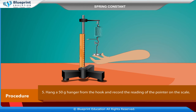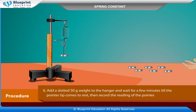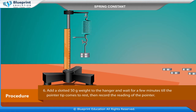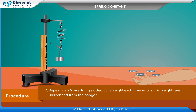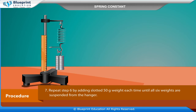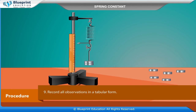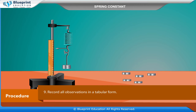Hang a 50 gram hanger from the hook and record the reading of the pointer on the scale. Add a slotted 50 gram weight to the hanger and wait for a few minutes till the pointer tip comes to rest, then record the reading of the pointer. Repeat by adding slotted 50 gram weights each time until all six weights are suspended from the hanger. Now unload the slotted weights one by one and take the reading each time. Record all observations in tabular form.